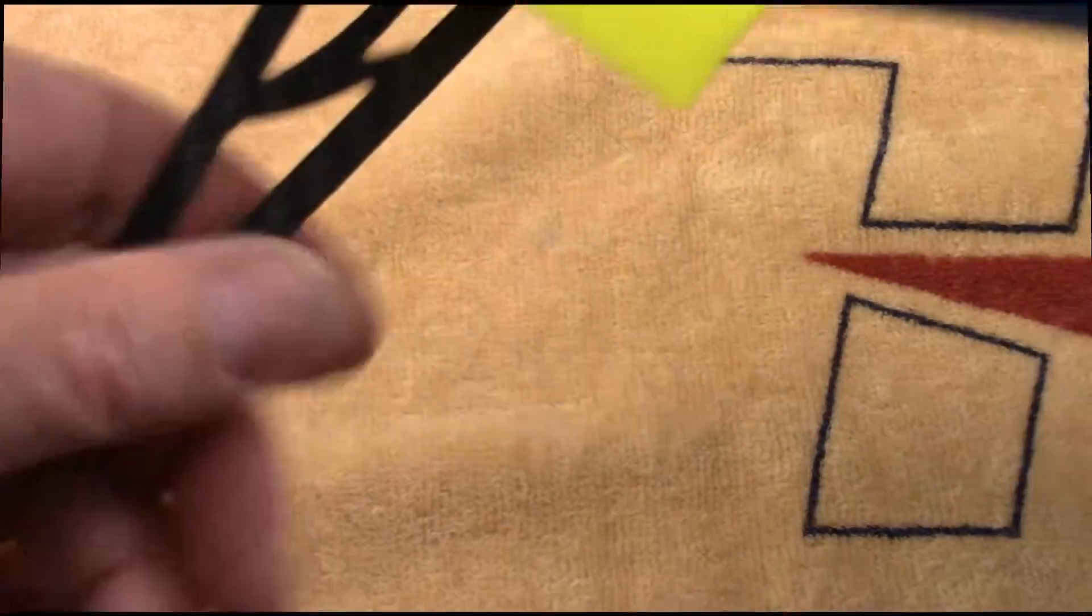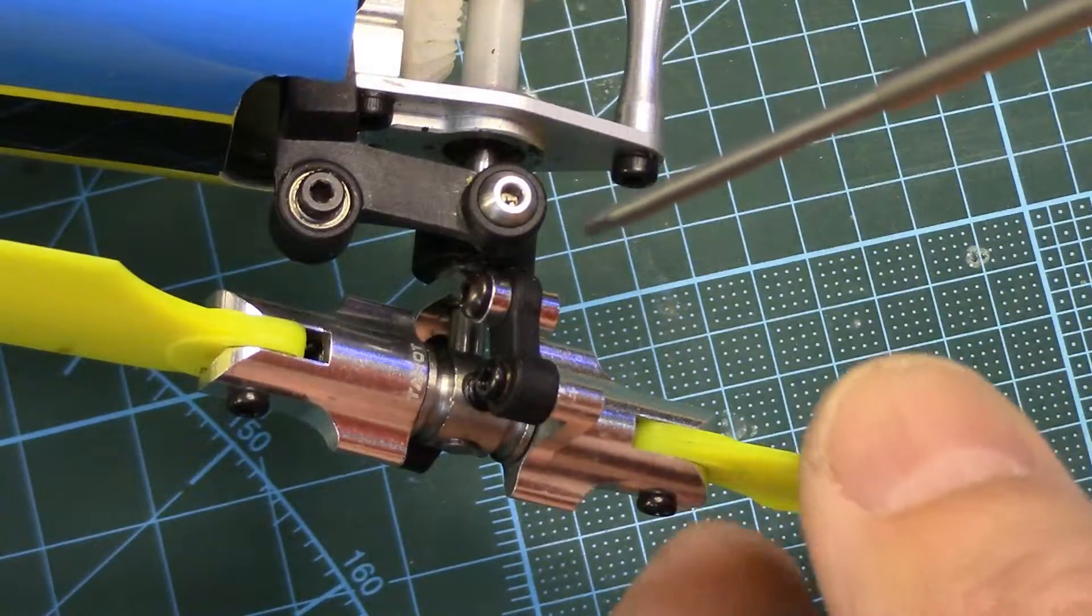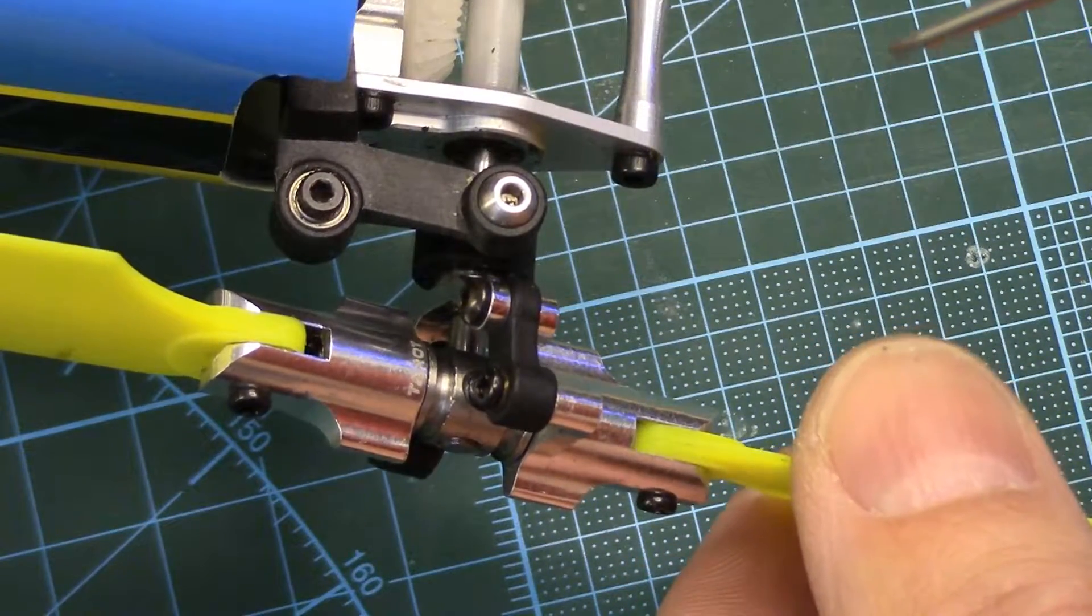I'm just going to turn this upside down. This gives a better view of what's going on. You can see the slop.